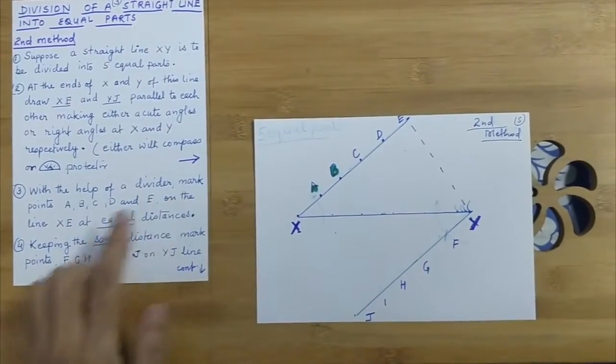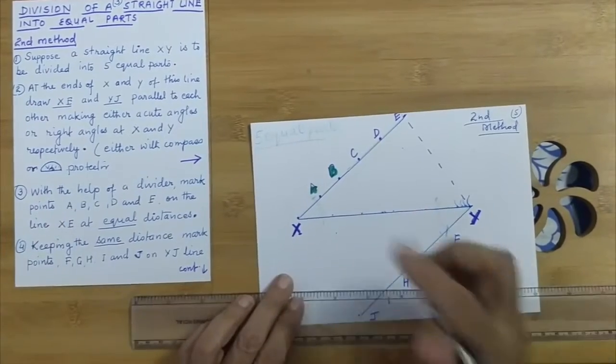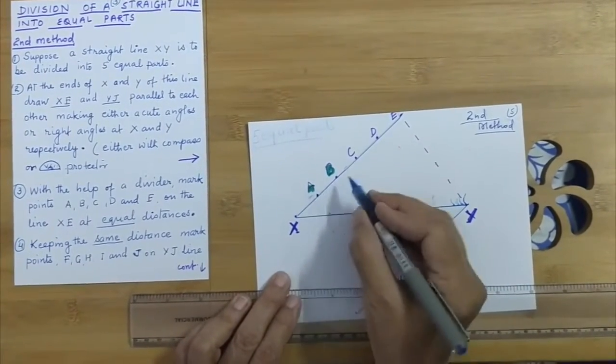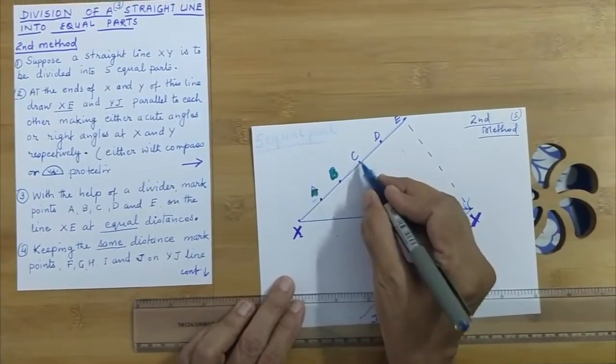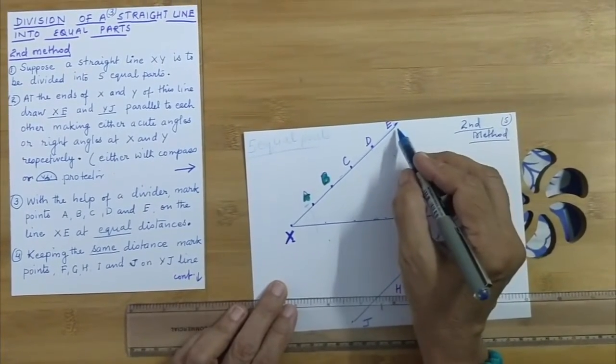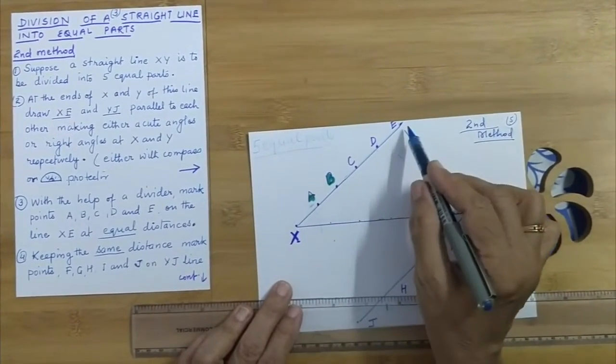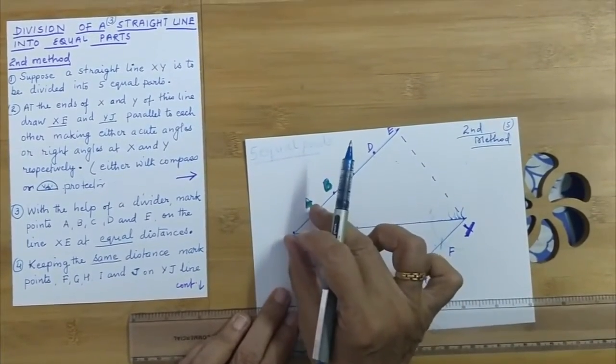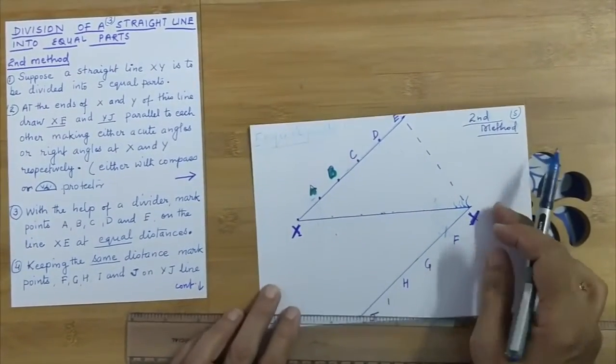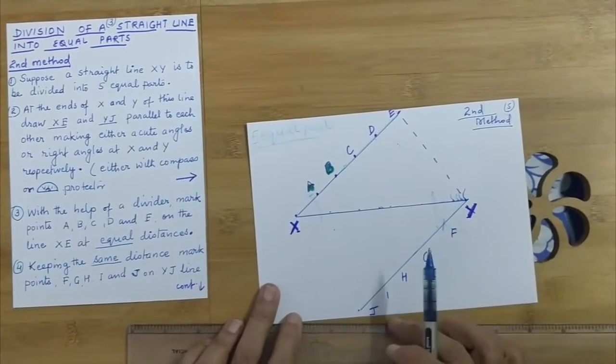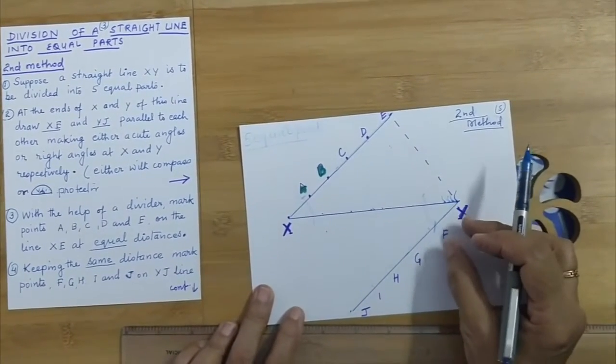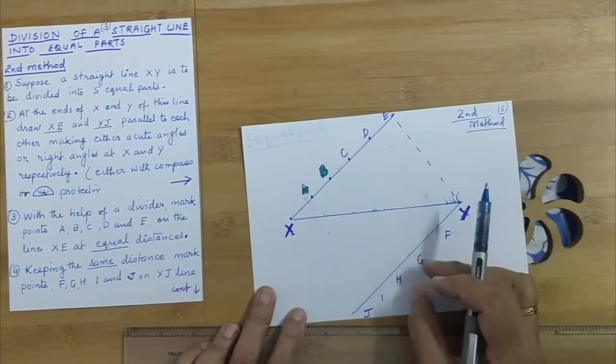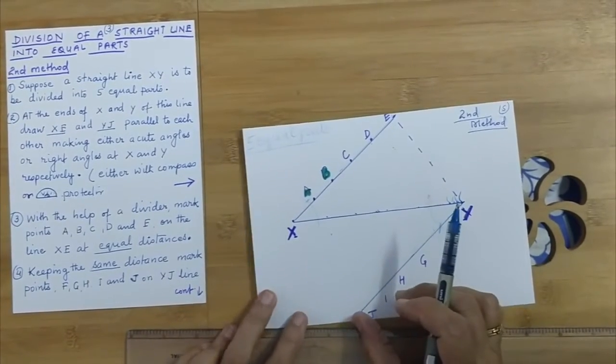Next, with the help of a divider, mark points A, B, C, D, E on line XE at equal distances. Keeping the same distance, mark the points on YJ as Y, F, G, H, I, and J.